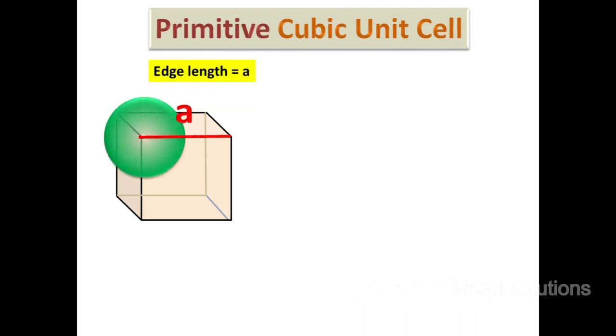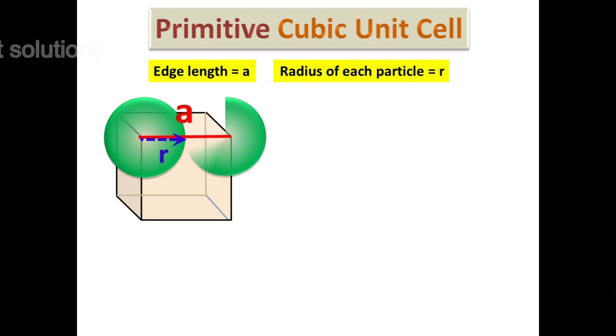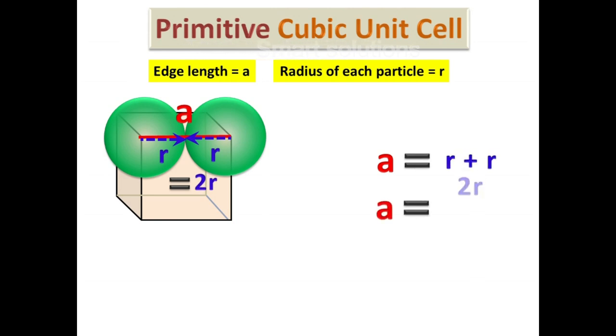Let's take edge length as a and the radius of each particle as r. Here we can see the edge length is a and this length is covered by two radii of the spheres. So a is equal to r plus r which is equal to 2r.